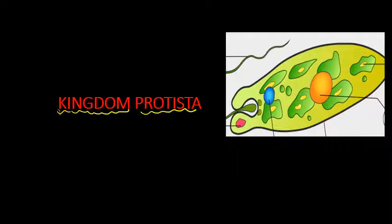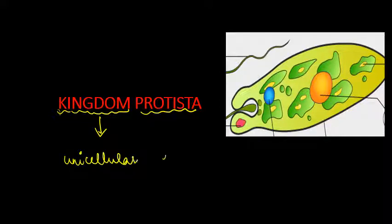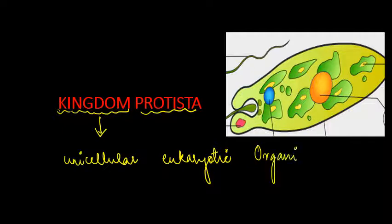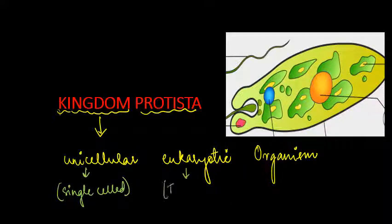Kingdom Protista includes unicellular eukaryotic organisms. Unicellular means made up of a single cell. Eukaryotic means having a true nucleus. So this kind of organism is included in Kingdom Protista.